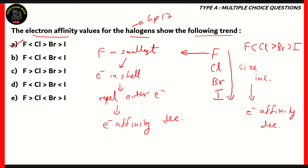Option A would be the correct option. In option B, it says fluorine has the least, which is incorrect. Option C would have been the order if fluorine didn't have repulsion, so option C is incorrect. In option D, it gives iodine an exception too, which is incorrect. In option E, it says bromine has a higher electron affinity than chlorine, which is also incorrect. The correct answer is option A: fluorine has less electron affinity than chlorine, which is the maximum; bromine has less than chlorine; iodine has less than bromine. So F less than Cl greater than Br greater than I is the correct order for electron affinity values for the halogens.